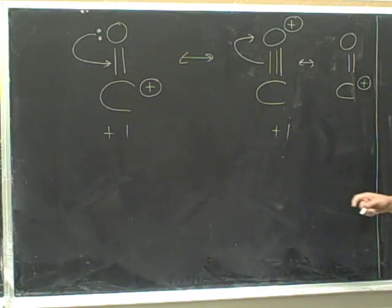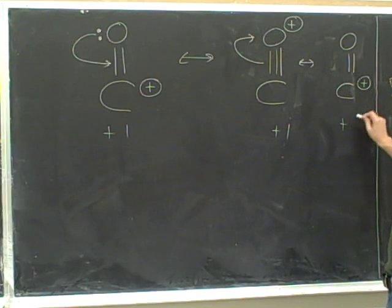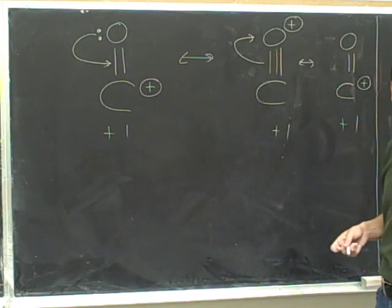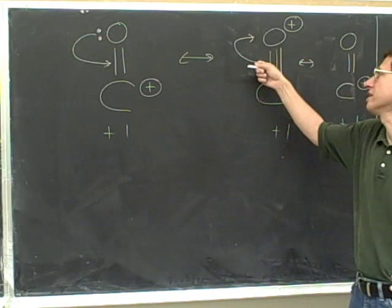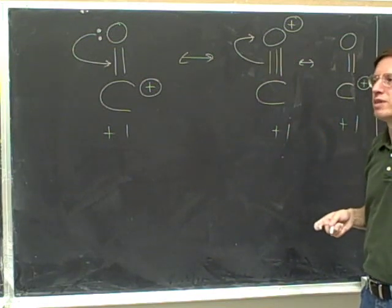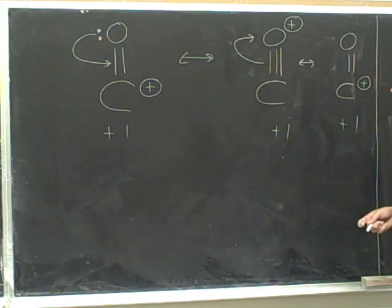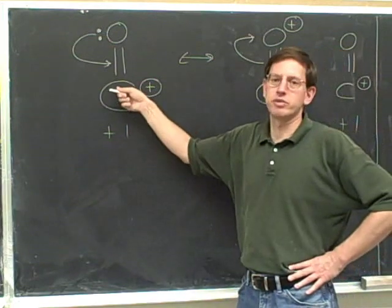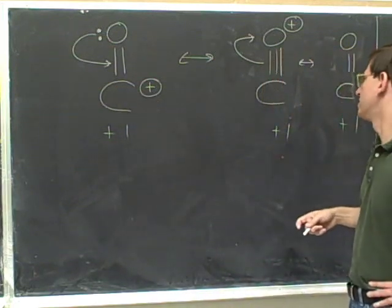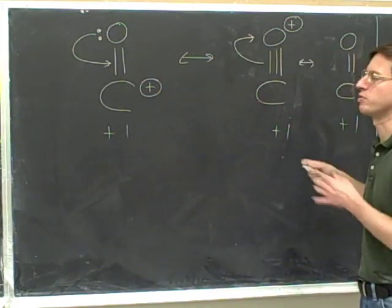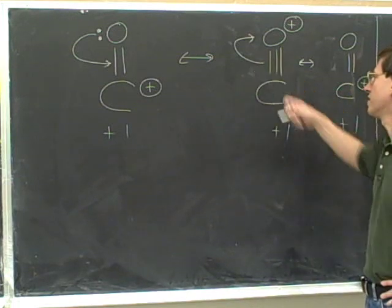Let's check if the net charge is balanced. We already determined this structure has a plus-one charge, and this structure also has a plus-one charge, so those charges balance. Taking electrons out of a triple bond is really not all that different from taking them out of a double bond — if the tail is in the bonding region between two atoms, you erase a bond, which you think of as a pi bond. You might notice that this resonance structure is the same one we started with. In real life, you would never draw this additional structure because it just repeats; I drew this arrow purely for practice with triple bonds.